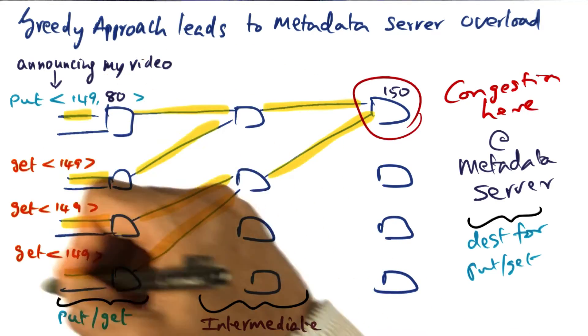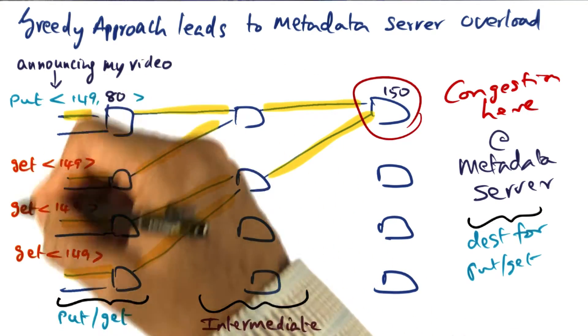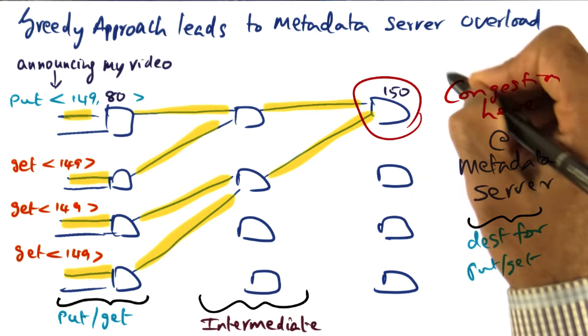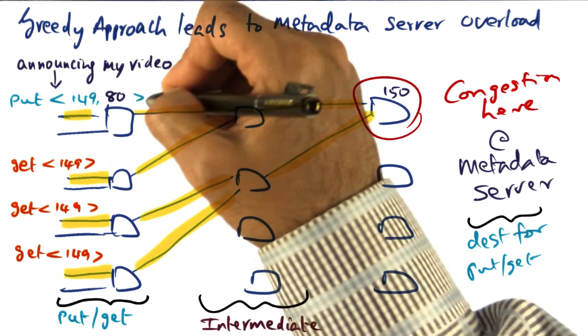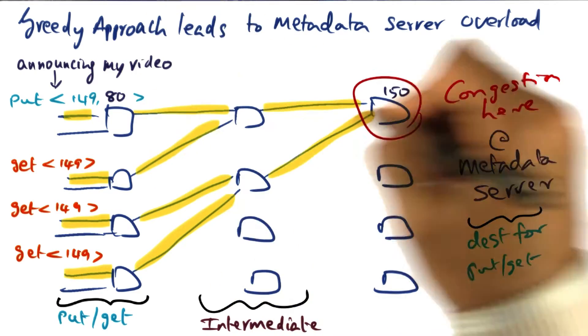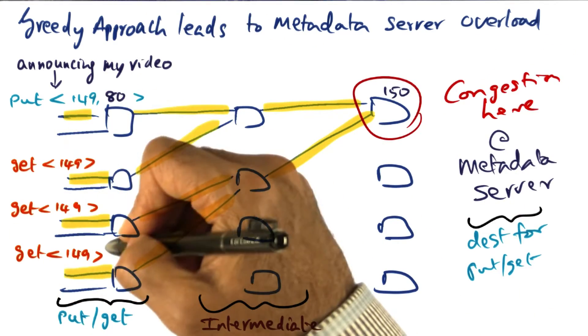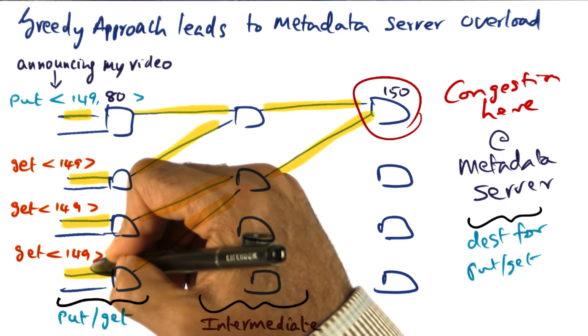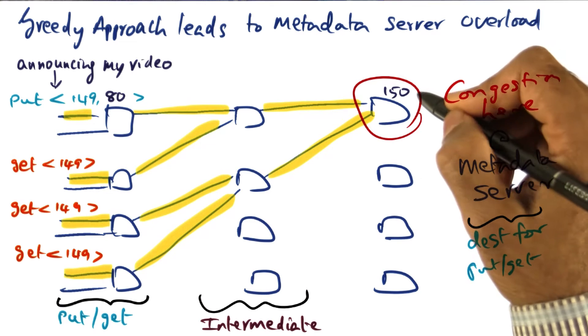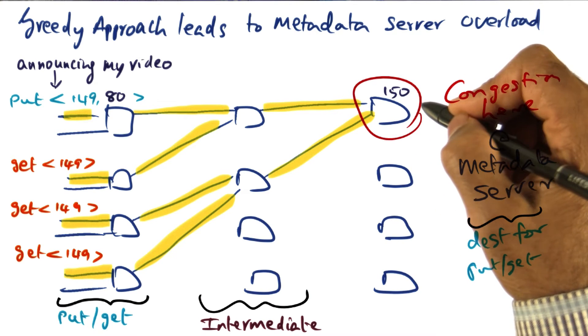149, they're all going to make get calls. And these get calls again end up with the same metadata server because that's the guy that is storing my key-value pair 149-80. And so all these gets saying I want to get 149, all of them go to the same node ID 150.